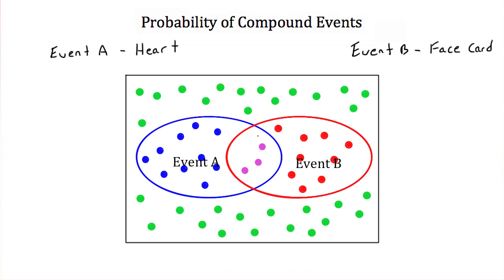All the blue and purple dots inside the blue ellipse represent event A. If you were to count them up, you would find that there are 13 cards that satisfy event A. Event A is pulling a heart from a deck of cards, and there are 13 hearts in a deck of cards.